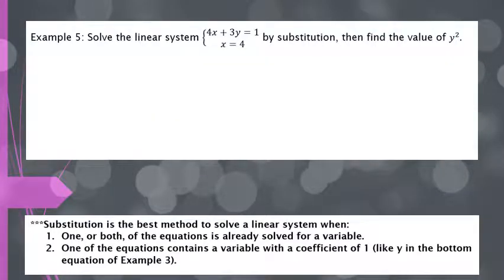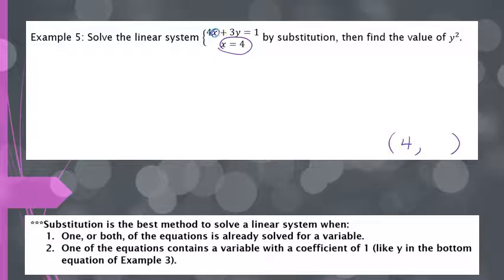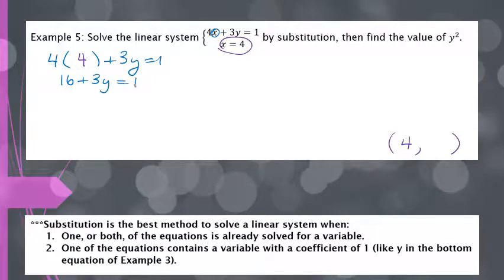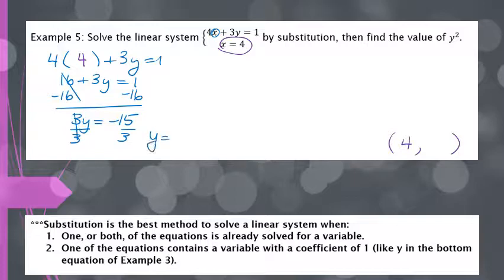This example is one of the best case scenarios because not only do we have an equation already solved for a variable, it doesn't even have the other variable — it's just a number. This tells me my x value is 4 directly. All I have to do is plug 4 into the x in my top equation to get my y value. So I write 4 times 4 plus 3y equals 1. That gives me 16 plus 3y equals 1. Subtracting 16 from both sides gives 3y equals negative 15, and dividing by 3 gives y equals negative 5.